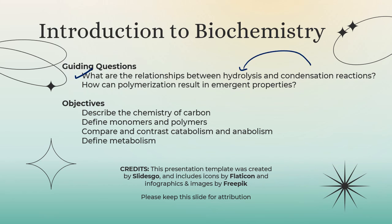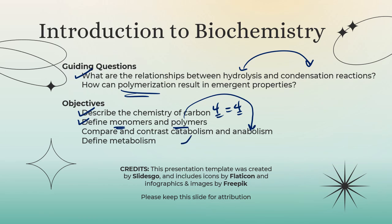To summarize: hydrolysis and condensation are opposite reactions involved in breaking down and building up polymers. Carbon has four valence electrons, needs four bonds, and forms them in many ways. Monomers are tiny pieces; polymers are big ones, formed in anabolic reactions. We chop those big pieces into monomers in catabolic reactions. Metabolism is the sum of it all. Good work today!